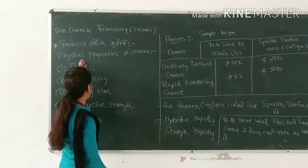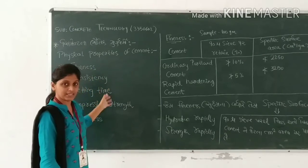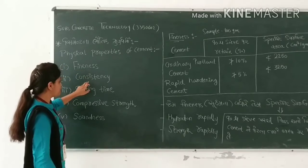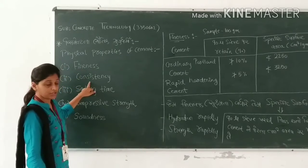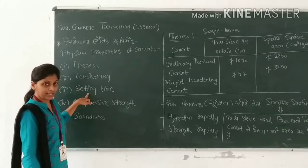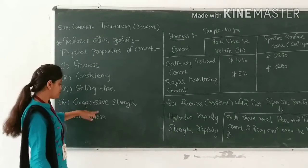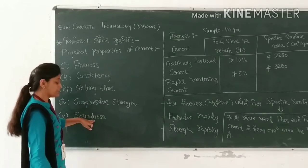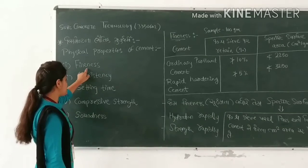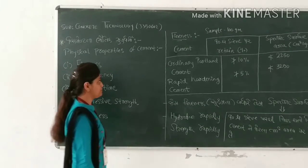The major physical properties of cement are listed below: fineness of cement, consistency of cement, setting time of cement, compressive strength of cement, and soundness of cement. Let's start with fineness of cement.